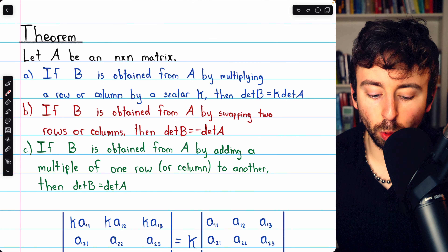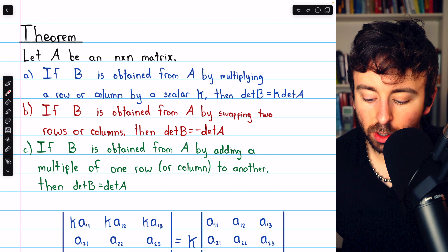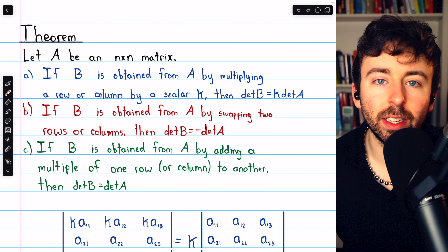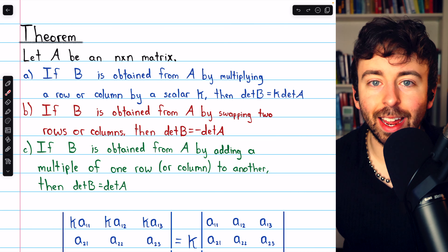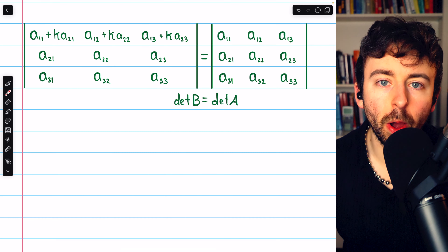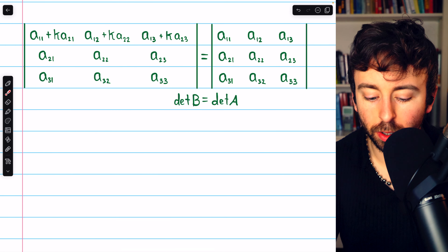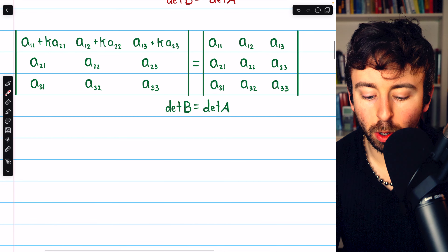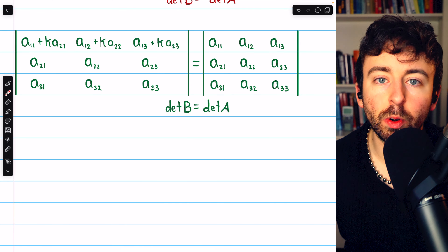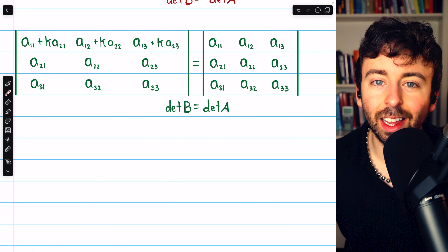Lastly, perhaps the nicest rule of all: if B is obtained from A by adding a multiple of one row or column to another, then the determinant of B is actually unchanged from A. The determinant of B equals the determinant of A if a multiple of one row or column is added to another. This rule will be easier to justify once we've proven a few more properties of determinants, so we will postpone explanation for now. In this example, k times row 2 has been added to row 1. The determinant of this new matrix obtained by adding a multiple of one row to another is not any different — it equals the determinant of A. Adding a multiple of one row or column to another doesn't change the determinant.